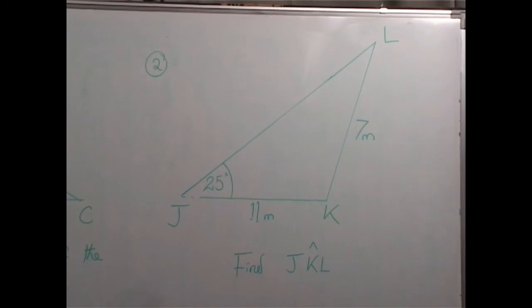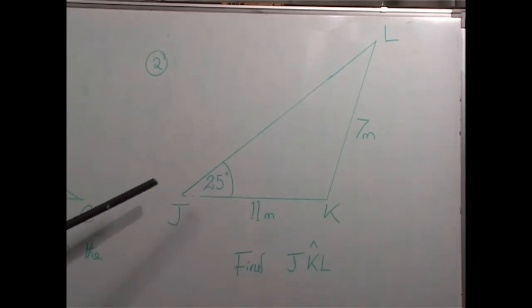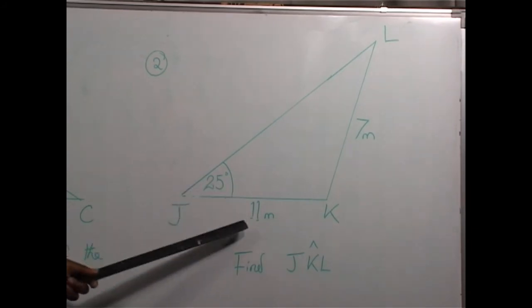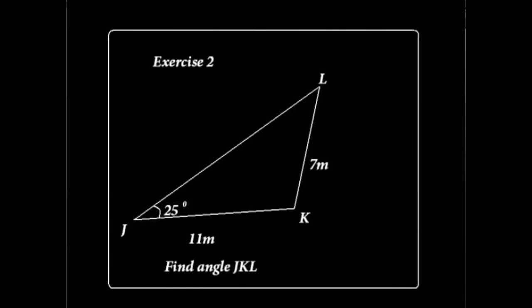In the second question, I have the triangle JKL, in which the angle at J is 25 degrees. The length of the side JK is 11 meters, and KL is 7 meters. I'm requesting you to find the size of the angle at K.